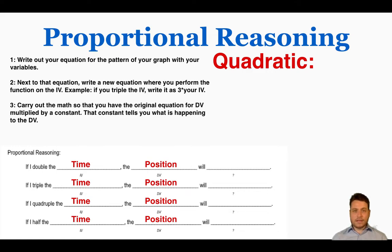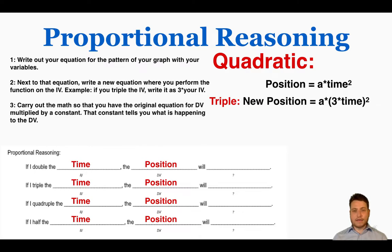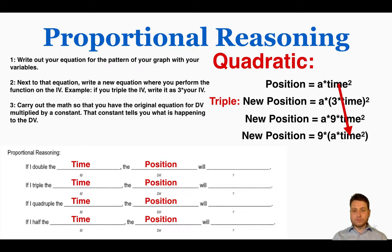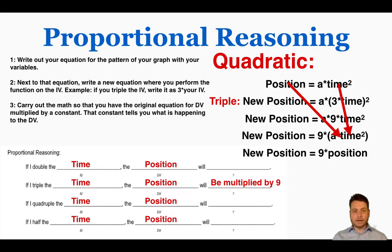Now let's say you've identified the graph as quadratic using the equations posters. A quadratic graph follows the equation DV = A × IV². So if you triple the IV, the new position equals A × (3 × time)². The entire IV is being tripled and then squared. Carrying out the square to both terms gives A × 9 × time². Isolating A × time² shows the new position equals the original position times 9. So if you triple the time, the position is multiplied by 9.